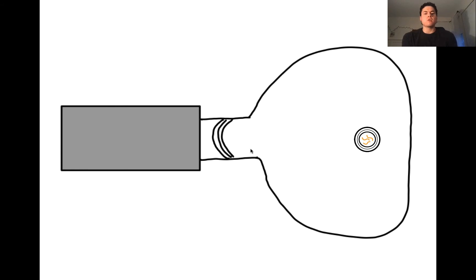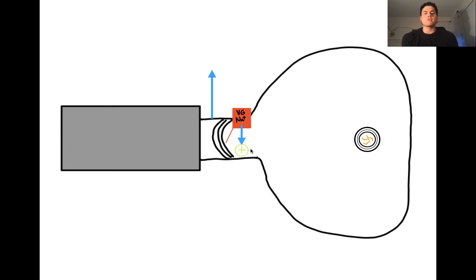This signal is going to be originating from voltage-gated sodium channels. Action potentials propagate down the axon and cause voltage-gated sodium channels to open. When they open, sodium flows into the cell. The sodium will then move into the synaptic terminal, depolarizing the membrane and opening voltage-gated calcium channels.